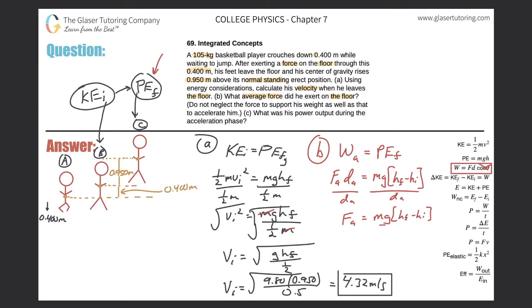So his mass is 105, gravity is 9.80, the final height minus the initial. Now just notice it's the final, here's the final height and here's the initial height.